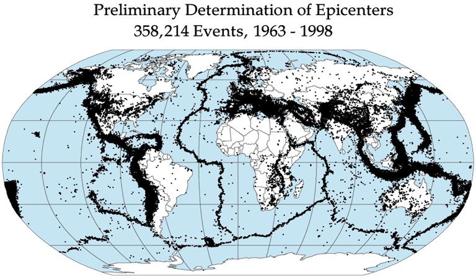A tectonic earthquake begins by an initial rupture at a point on the fault surface, a process known as nucleation. The scale of the nucleation zone is uncertain, with some evidence suggesting it is smaller than 100 meters, while other evidence, such as a slow component revealed by low-frequency spectra of some earthquakes, suggests it is larger. The possibility that nucleation involves some sort of preparation process is supported by the observation that about 40% of earthquakes are preceded by foreshocks. Once the rupture has initiated, it begins to propagate along the fault surface.